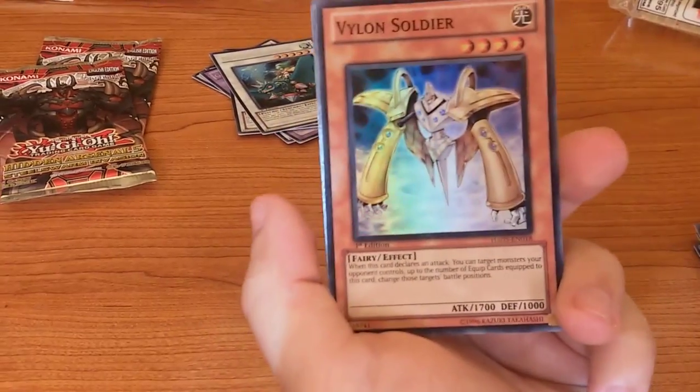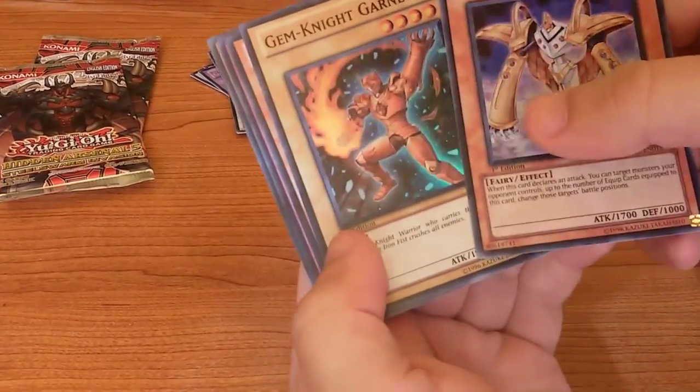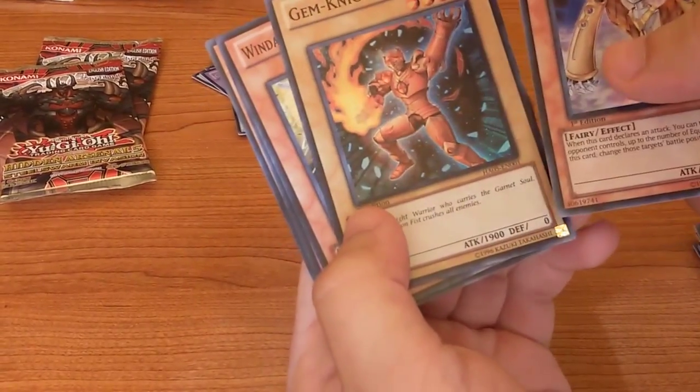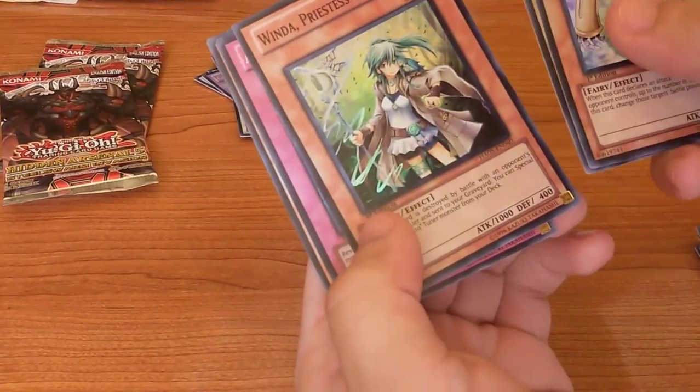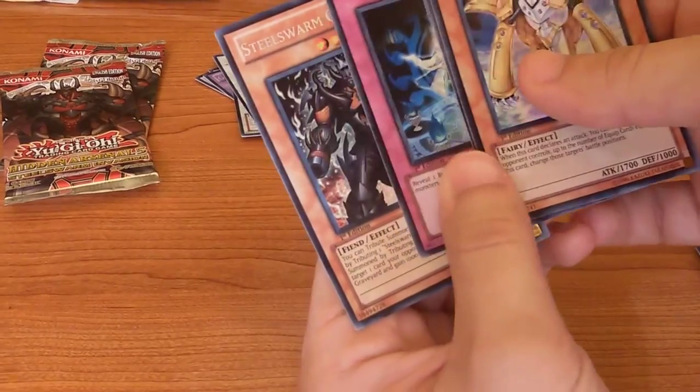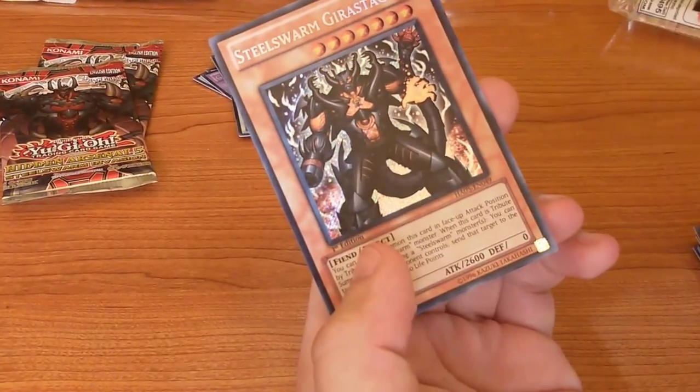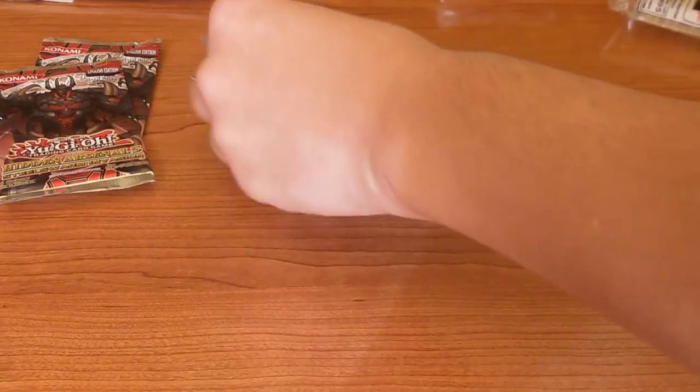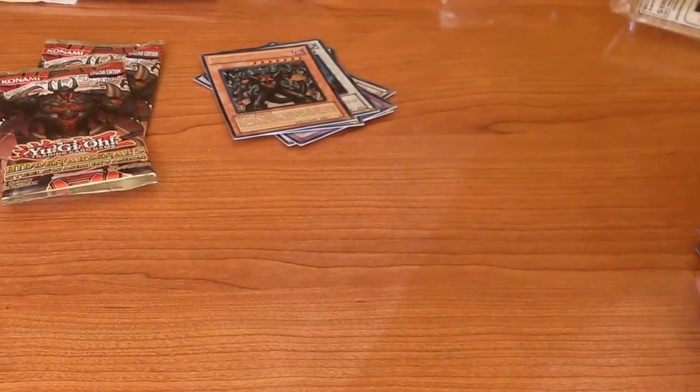Okay, this is getting annoying, like really annoying. Gem Knight Garnet, Winda, Aquamirror Meditation, and Steelswarm Girl Style. Okay, two more packs.